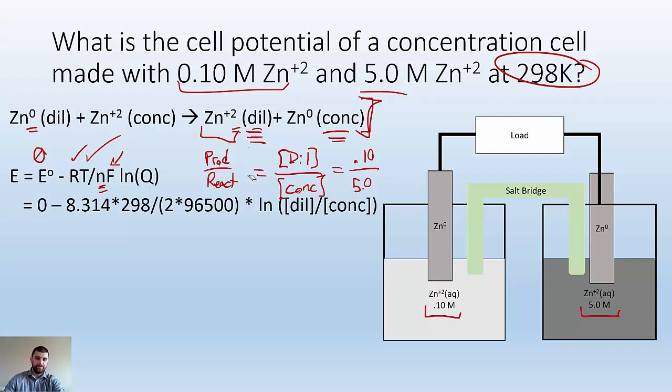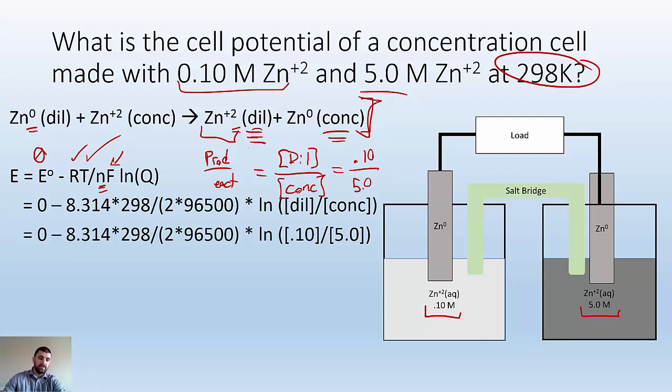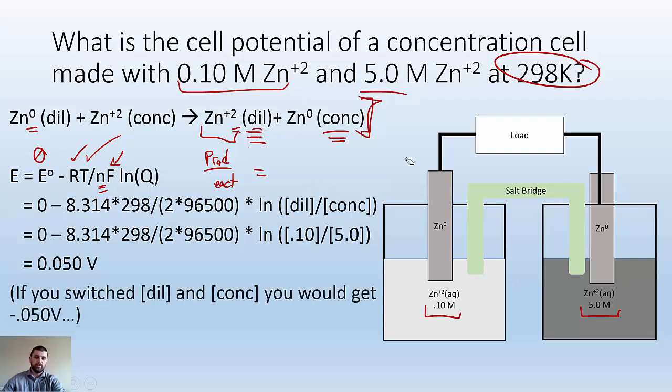I'm going to plug it all in. R constant, temperature, N equals 2, F, ln of the diluted over the concentrated. Plug those numbers in, and I get 0.050 volts. If you confuse the diluted side and concentrated side, it's going to give you a negative voltage. If you switched them, you get -0.05 volts. Just know that you goofed and switched them up. Let that be a signal something went wrong.